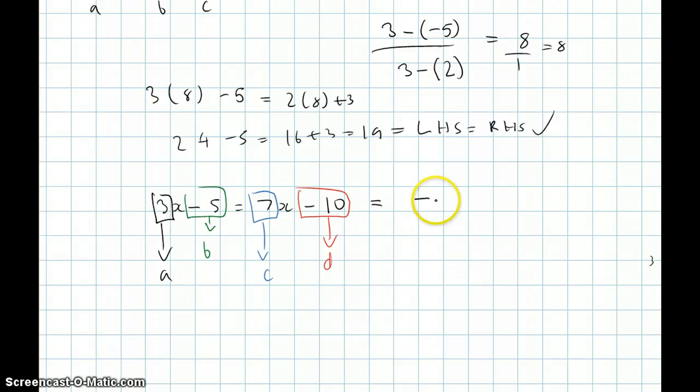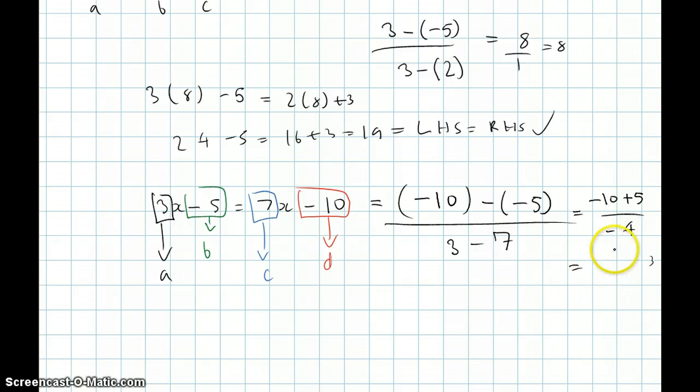So minus 10 minus minus 5 over a minus c, which is 3 minus 7. Then we would get minus 10 plus 5 over minus 4, which would give us minus 5 over minus 4, which is 1.25. We cross out the signs, we'd get 1.25.